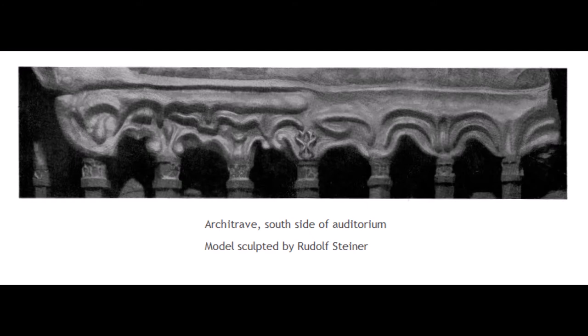Likewise, the simple upper zone of the architrave is concave above the first half and convex above the second. The first three arches show a simple downward gesture; the last three a complex flow from above. The first three have the bodily quality of sheaths; the last three the spiritual quality of beings.